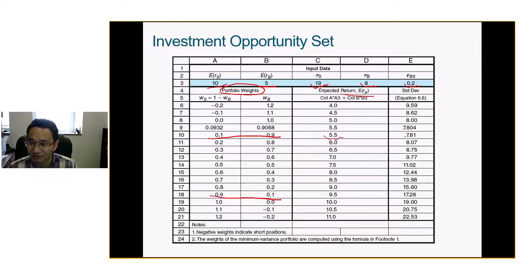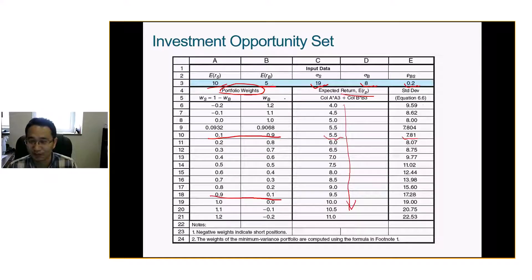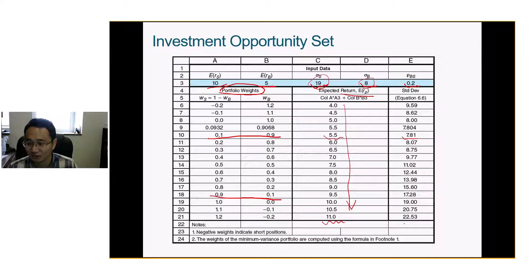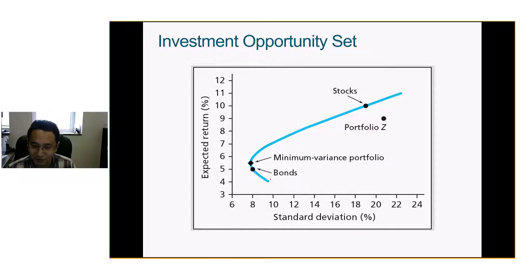And then the standard deviation — we use the formula we discussed. As we can see, the return changes because stocks have a higher expected return than bonds, so you're going to have a higher portfolio return. However, because stocks have a larger standard deviation than bonds, the risk also goes up. If you plot it, you'll realize it's a curve — not a straight line — because we don't have perfect correlation.